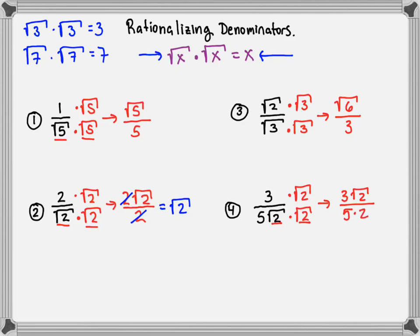And then I've got to clean it up. So what I want to do is bring the top down, 3 square root of 2. And of course, 5 times 2 is 10. And that is that guy all simplified out.